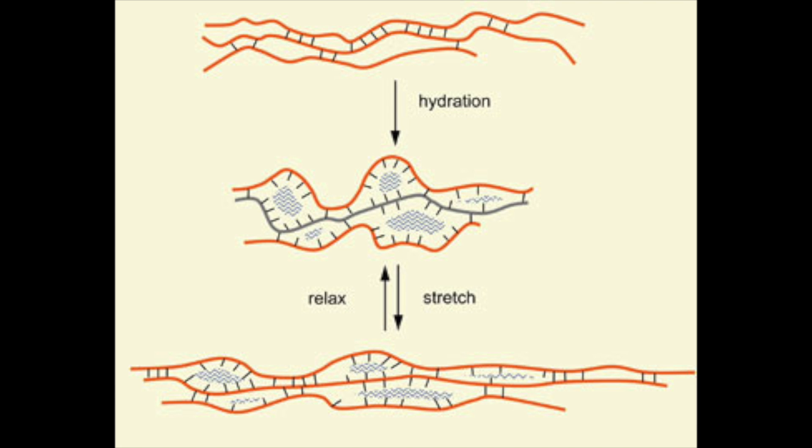Glutamine has a strong tendency to form hydrogen bonds, indicated by the grey lines, between two protein strands, indicated by the orange lines, as the dough is stretched. This is one of the main reasons for the physical structure and behaviour of gluten.